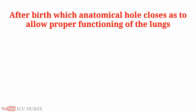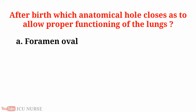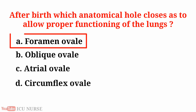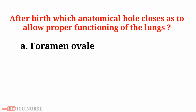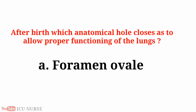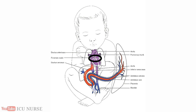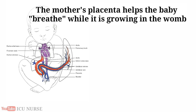After birth, which anatomical hole closes to allow proper functioning of the lungs? A. Foramen ovale, B. Oblique oval, C. Atrial oval, D. Circumflex oval. And the answer is A. Foramen ovale. The foramen ovale is an important structure in the fetal heart, allowing blood to flow directly into the left atrium from the right atrium.